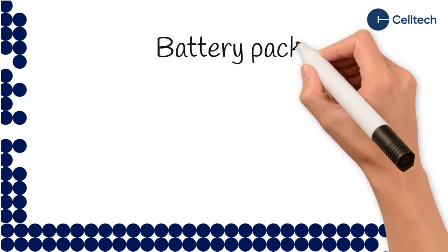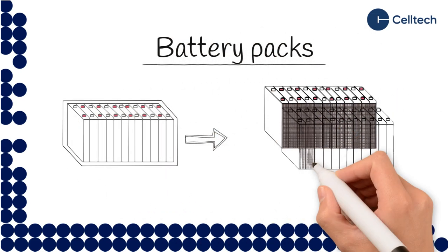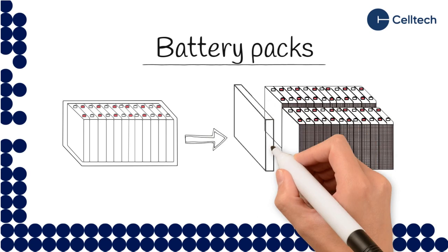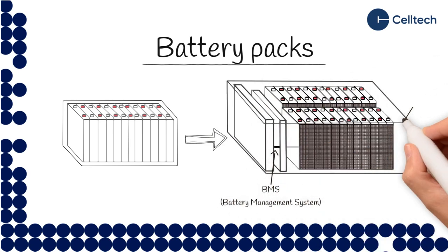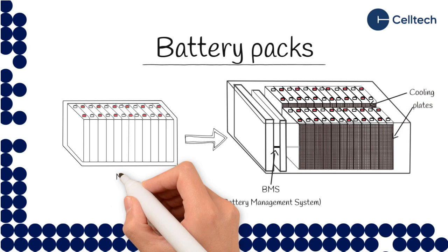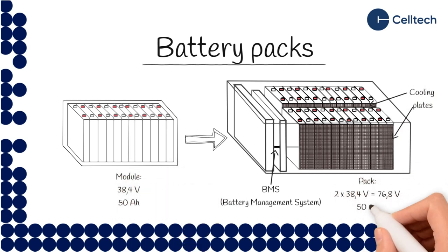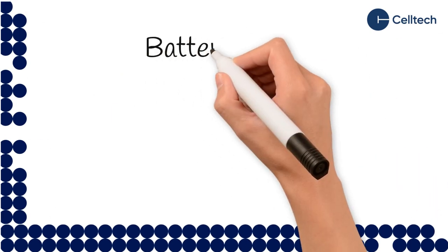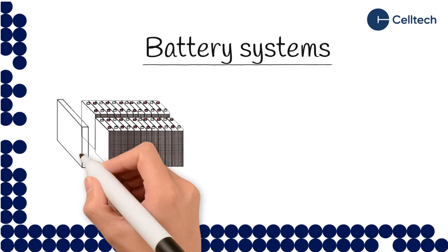When modules are put together they form a pack. A battery pack has a battery management system (BMS) that protects the battery from operating outside its safe operating area and monitors its state of charge, among other things. Inside the packs, the modules are connected in series or parallel to achieve the desired voltage and energy capacity. When packs are put together they form a system.